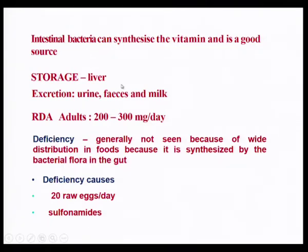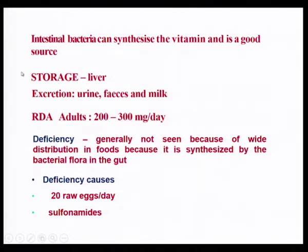We know that the liver is a good source for storing fat-soluble vitamins. One reason people quickly run short of water-soluble vitamins is because they are not adequately stored in the liver—they are stored, but not adequately. For biotin, the general reservoir is the liver, and biotin is also eliminated from the system in urine, feces, and milk. The daily requirement of biotin is around 200 to 300 micrograms per day.